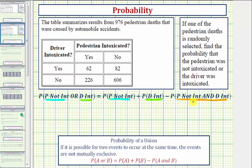Now we'll determine each of these probabilities. To begin, we'll determine the probability the pedestrian was not intoxicated. Notice how we can determine that information from this column here. This column indicates the number of pedestrians that were not intoxicated. Since 82 plus 606 equals 688, the probability that the pedestrian was not intoxicated would be 688 divided by the total number of deaths, which is 976.